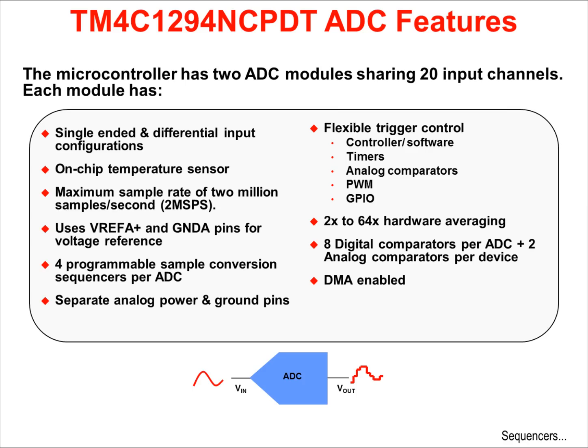The ADCs have very flexible trigger control and can be triggered by software, timers, analog comparators, PWM, and any GPIO. Hardware averaging is available from 2 to 64 times in powers of 2. Each module has 8 digital comparators and 2 analog comparators per device, and both modules are DMA-enabled.